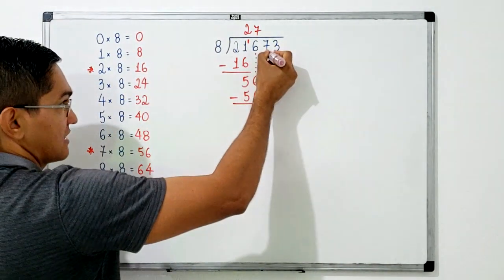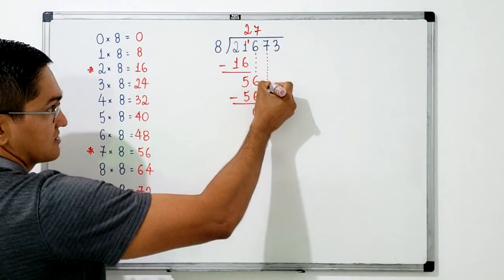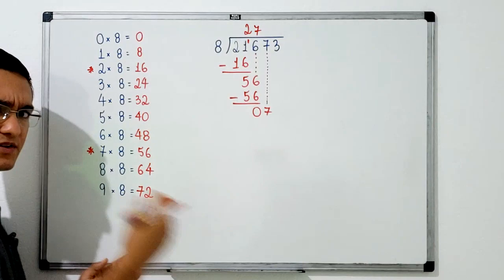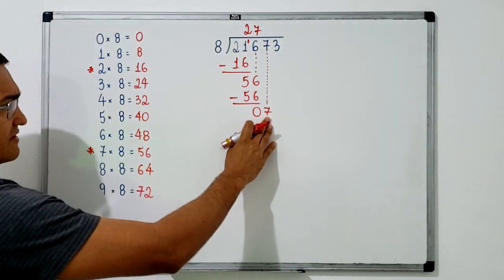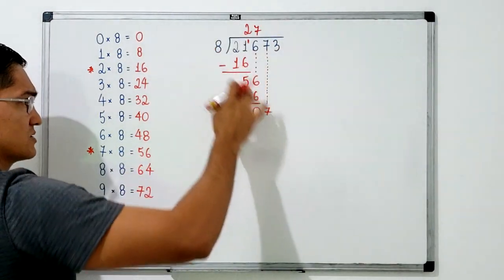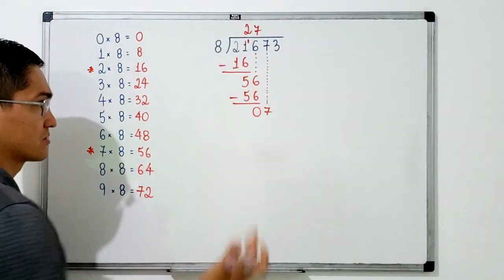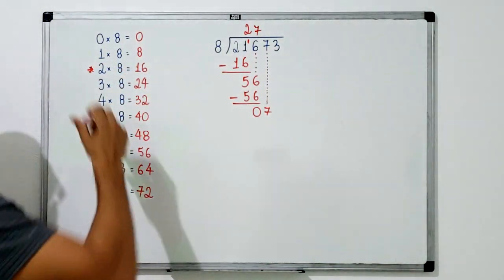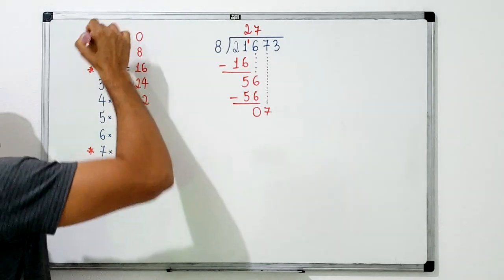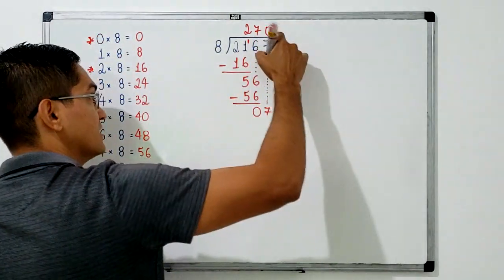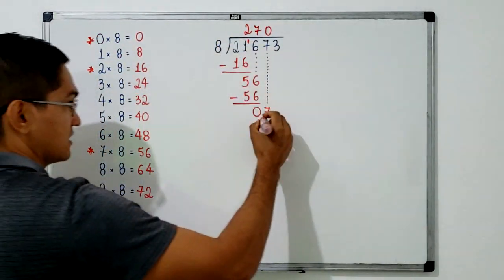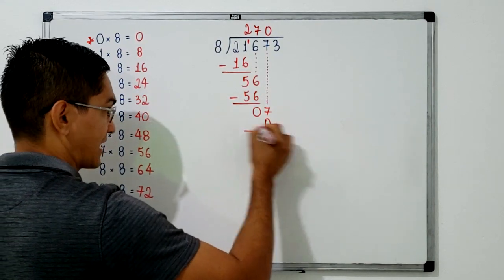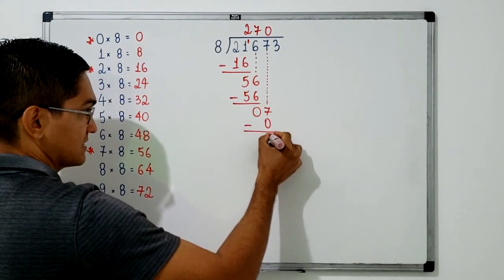After the subtraction, I bring down the next digit, giving us 07. You can forget the 0 on the left — think only about the 7. How many times does 8 go into 7 without going over? Since 1 times 8 is already too much, the number is 0. I write 0 in the quotient. 0 times 8 equals 0, so I write 0 and subtract: 7 minus 0 is still 7.